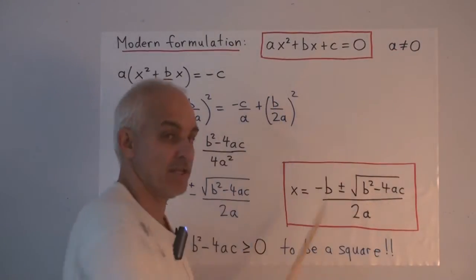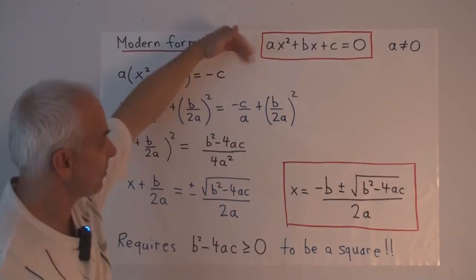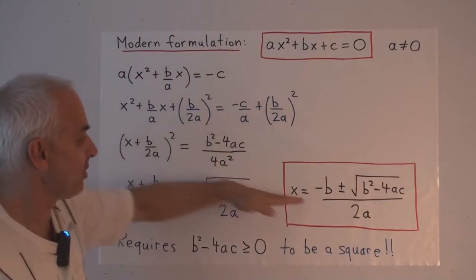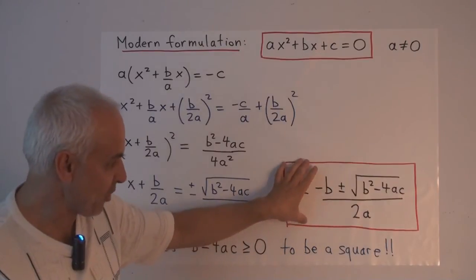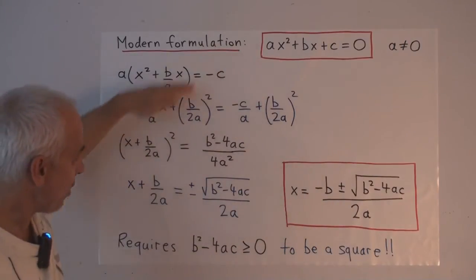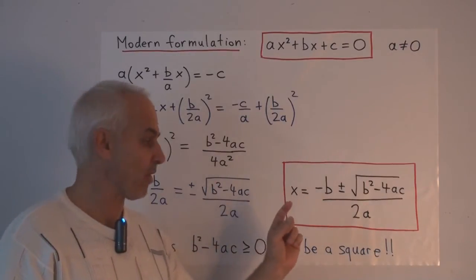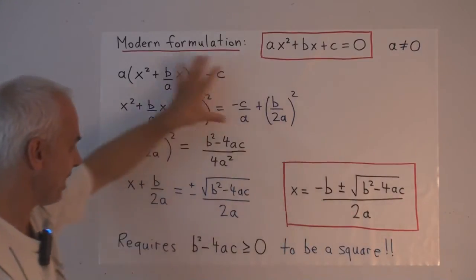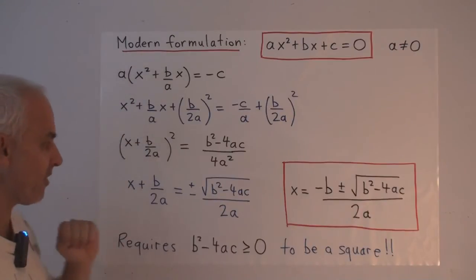And we'll assume that this coefficient a is nonzero, so we really have a quadratic equation. And now there's a step-by-step procedure to transform this equation into an equation for x. This is a well-known formula that all students are learned, and how to get that solution is almost as important—perhaps maybe it's more important—than actually the solution itself. So it's something that all serious students of mathematics should know.